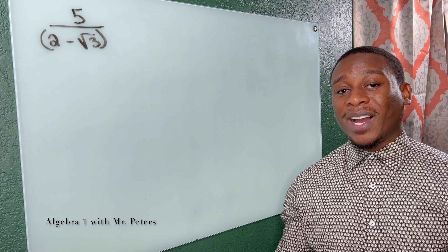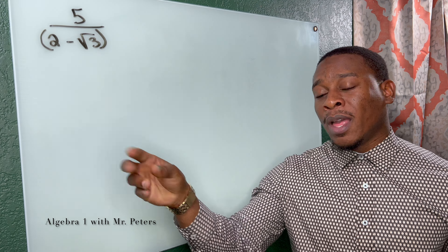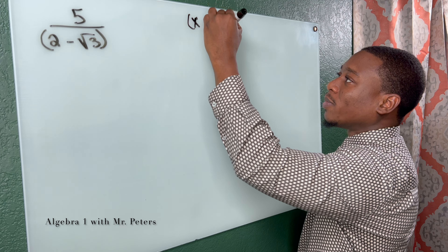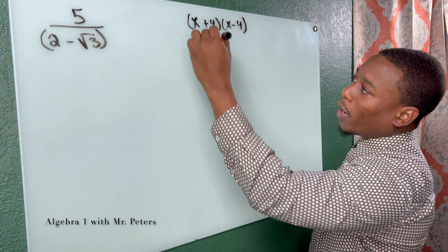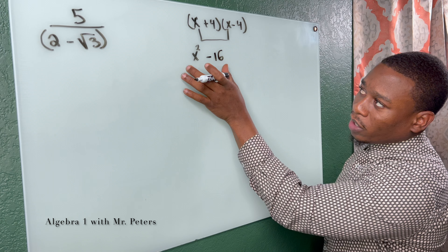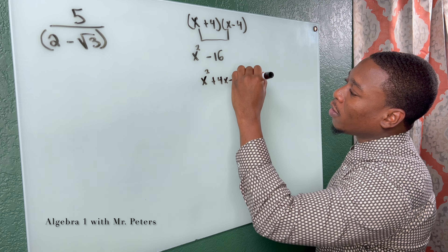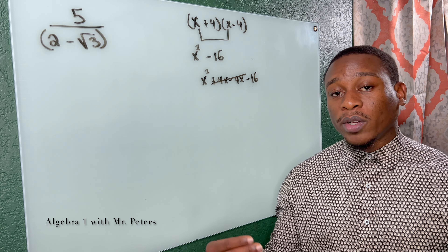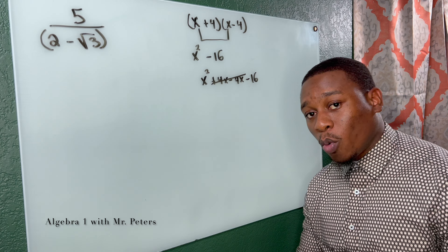In part 3 of the video, we're now rationalizing the denominator when we have a binomial expression — so we have two terms. To understand this, we have to understand the difference of squares. So x plus 4 times x minus 4 — when we go ahead and FOIL, what happens is we just multiply the two first terms and the two last terms, because the two middle terms are going to cancel. So if we FOIL it all the way out, we'd have x squared plus 4x minus 4x minus 16 — the middle terms cancel out. Why is that important? Because the same thing is going to apply here: for us to get rid of the radical, we have to multiply by what is called its conjugate.